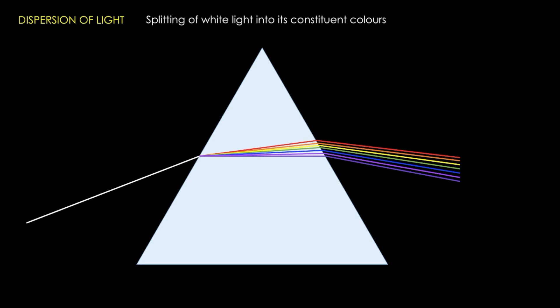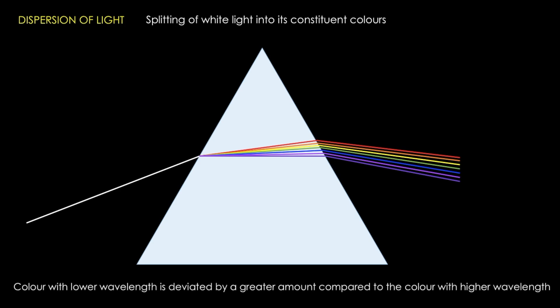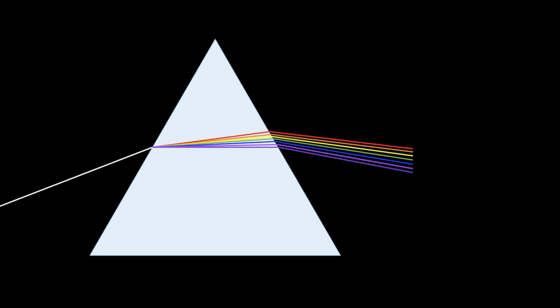The reason for dispersion of light is that colors with a lower wavelength are deviated by a greater amount compared to colors with higher wavelengths. This is how white light gets dispersed into its constituent colors — violet, indigo, blue, green, yellow, orange, and red. Red light has a wavelength of 8000 angstroms whereas violet light has a wavelength of 4000 angstroms. This band of colors produced by dispersion is called the spectrum, or more specifically the visible spectrum.